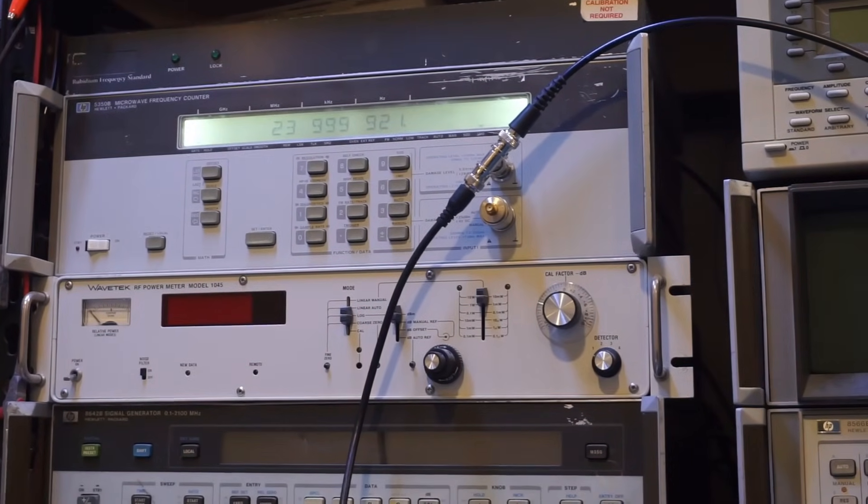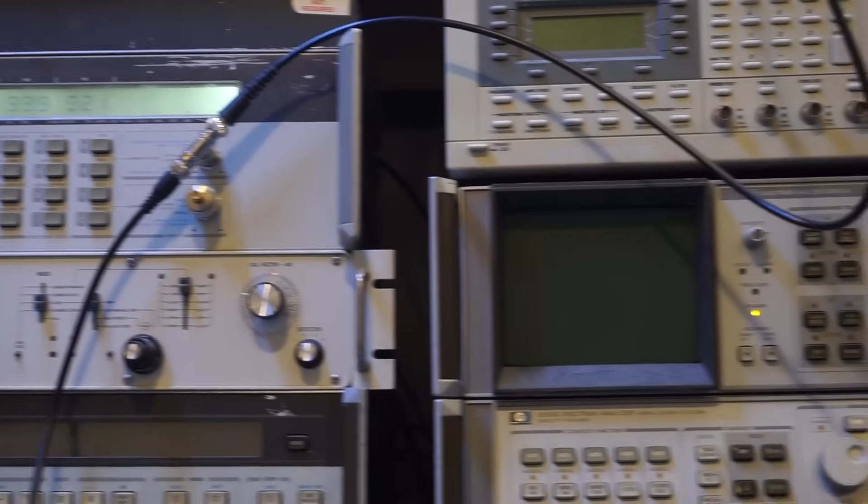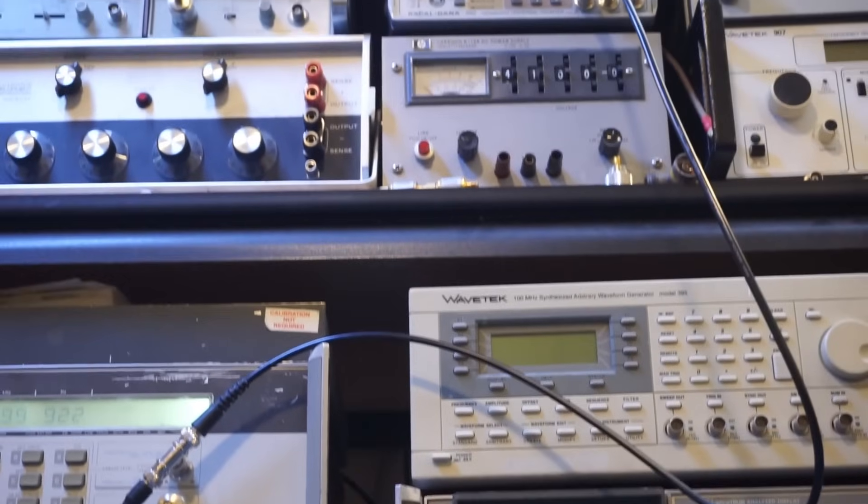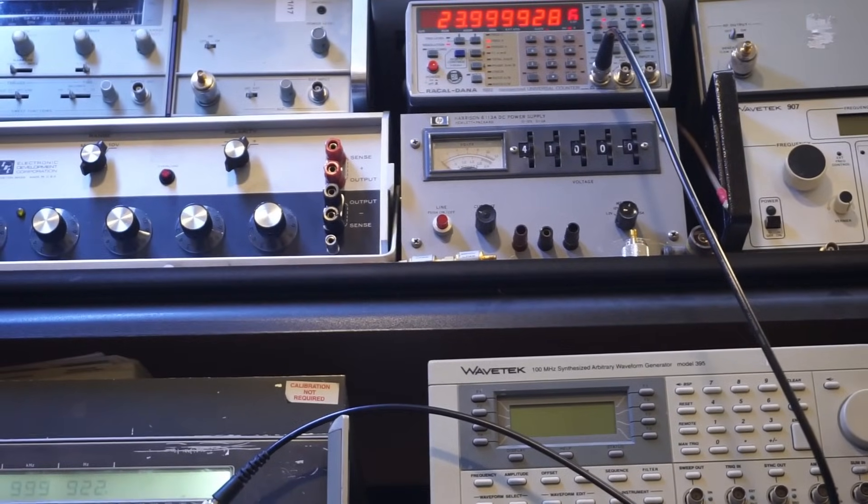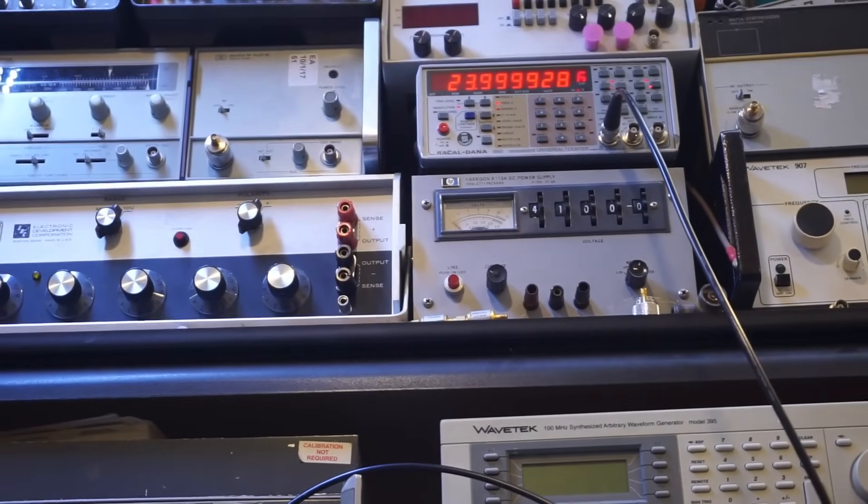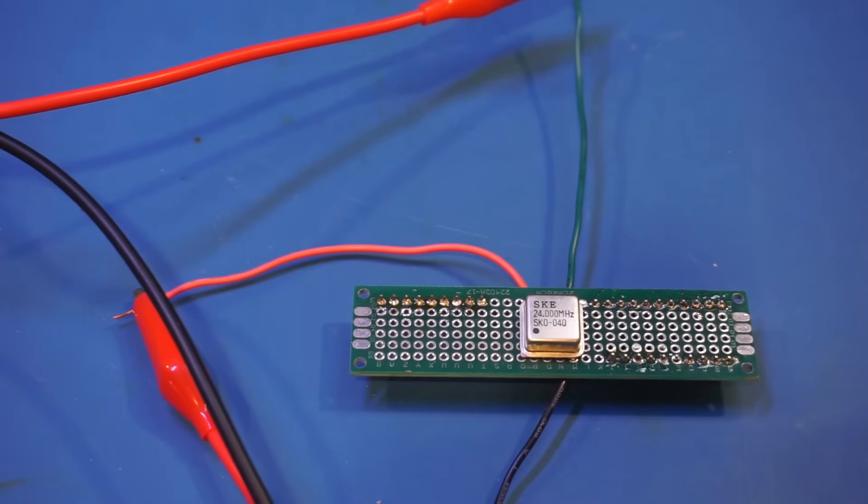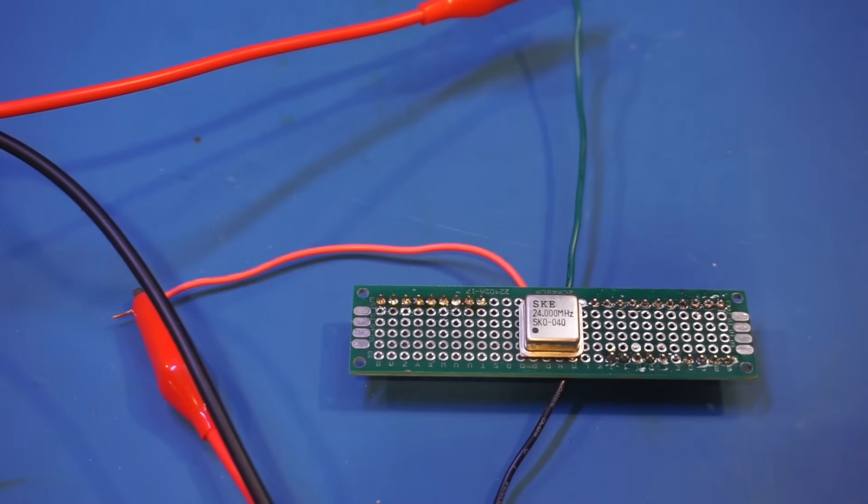I also chained the output to another frequency counter for verification. The other frequency counter is the Rekodena one up there, and it shows 24 MHz as well. Both the HP and the Rekodena frequency counters are actually very accurate. Their measured results are only about 7 Hz apart.